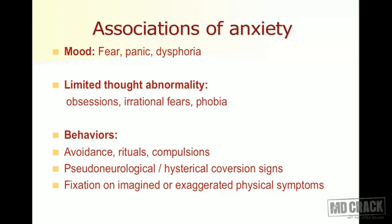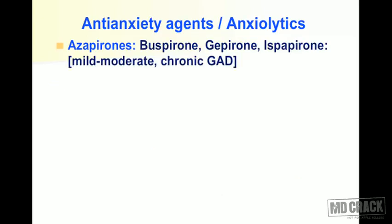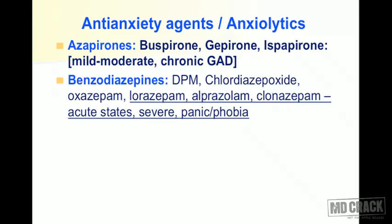The anti-anxiety agents or anxiolytics are classified into groups. A very important newer group is called azapirones, which contains buspirone, gepirone, and ipsapirone. They are used for mild to moderate anxiety as well as for chronic generalized anxiety disorder (GAD). Azapirones are distinctly different from all other drugs because they act on the 5-HT1A receptor and are partial agonists at 5-HT1A receptors.